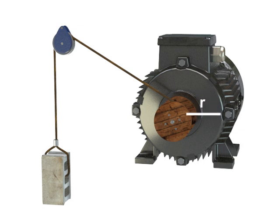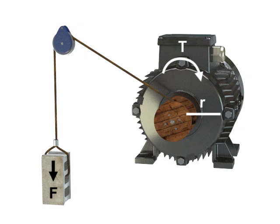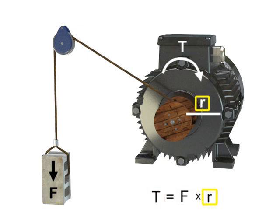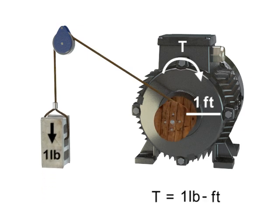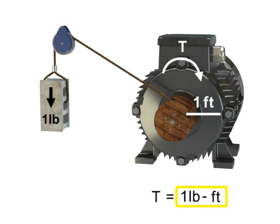Work is defined as a force applied over a distance. In the case of flywheels, winches, and motors, the work is called torque. Torque is a special type of work that produces rotation. Torque occurs when a force acts on a radius. Typical units of measurement for torque are pound-foot. The torque illustrated here is equal to one pound-foot.